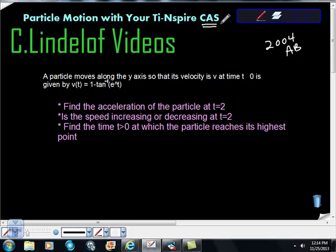This is off the 2004 AB Free Response, and it says a particle moves along the y-axis, so its velocity v at time t is greater than or equal to 0 is given by v(t) equals 1 minus inverse tan of e, Euler's number, to the t power. Find the acceleration of the particle at time equals 2.